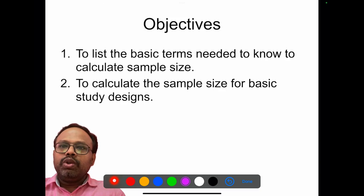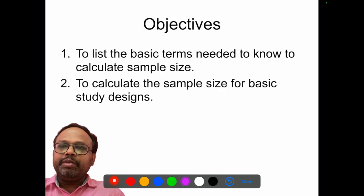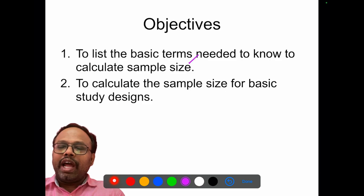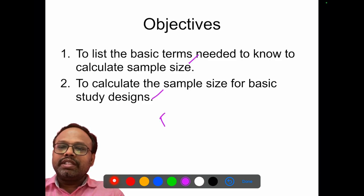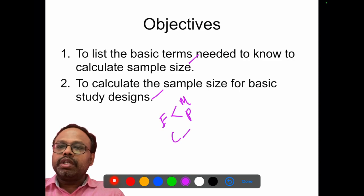The objectives of this session are to list the basic terminologies related to calculation of sample size, and to calculate the sample size for basic study designs — that is, estimation and comparison of mean and proportion.